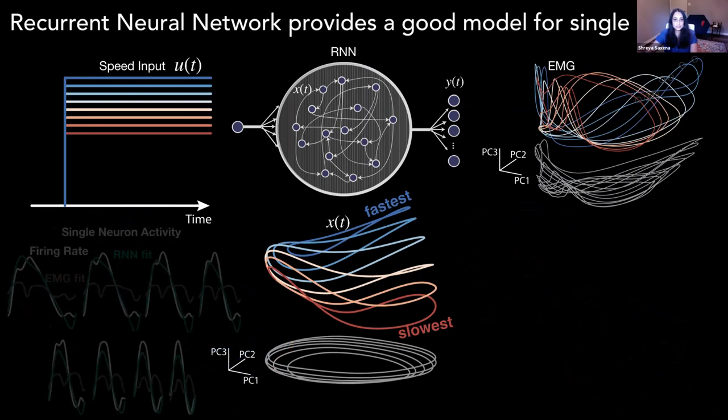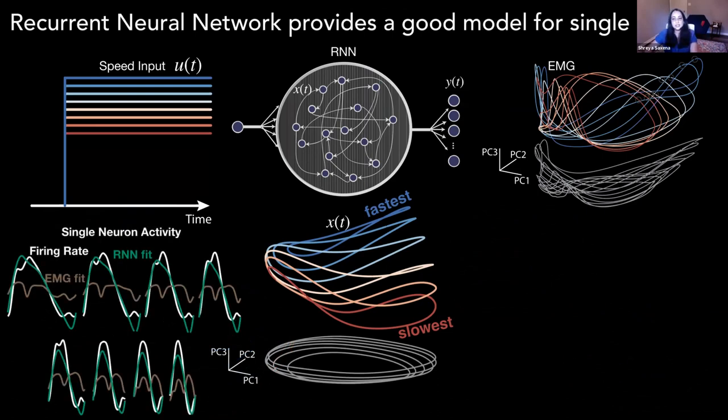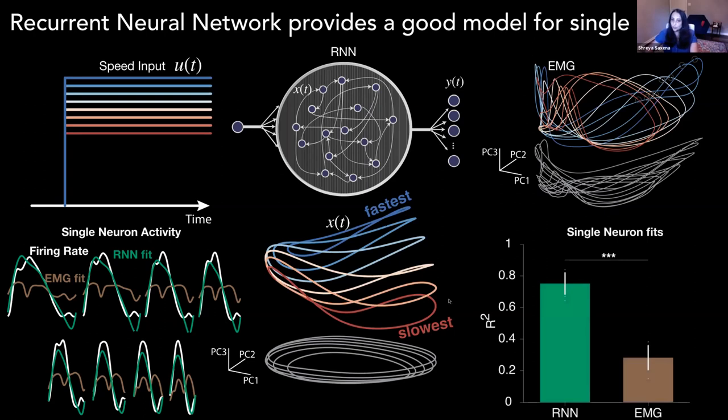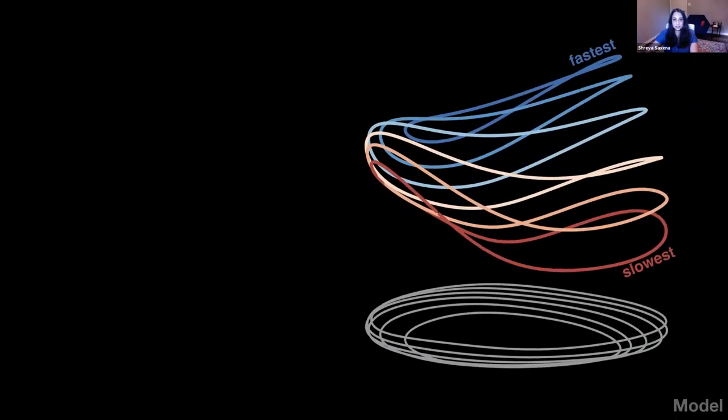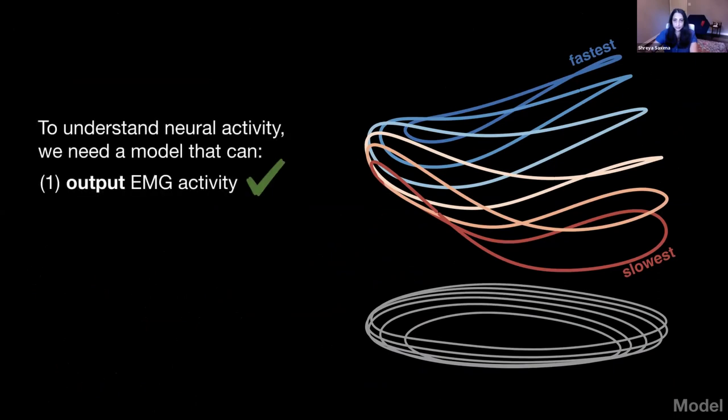And how do we know that? We can actually decode the neural signals better using the network activity than if we had just considered the EMG data. So here I'm showing you an example neuron firing rate in white. And the corresponding fit using the RNN PCs one through three in green. And you can see that the fit is quite good, much better than if we had used the EMG PCs one through three. And it's not true just for this one neuron. In fact, single neurons as a whole are fit much better using the RNN activity as compared to the EMG activity.